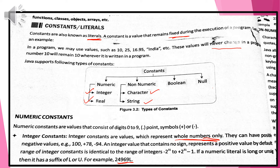Java supports the following types of constants — you just look at the screen. That is the numeric constant, non-numeric constant, boolean constant, and the null constant. Individually, the numeric constant is again divided into integer and real; non-numeric is divided into character and string; and then boolean and null. First we discuss what is the numeric constant.